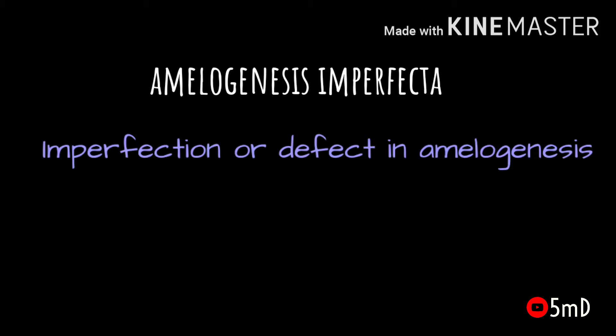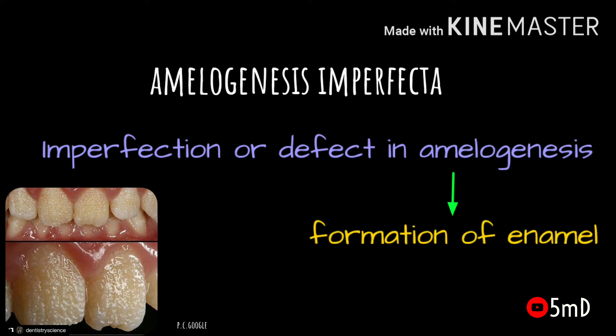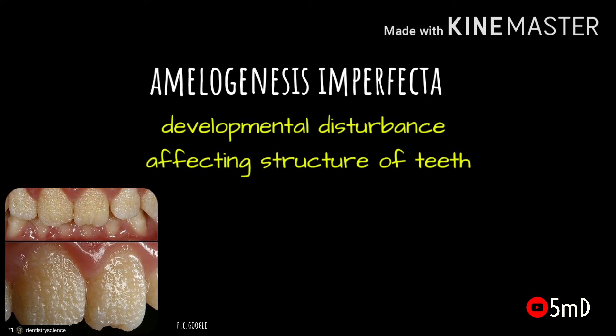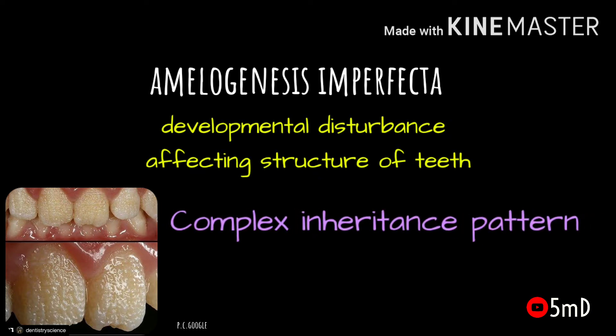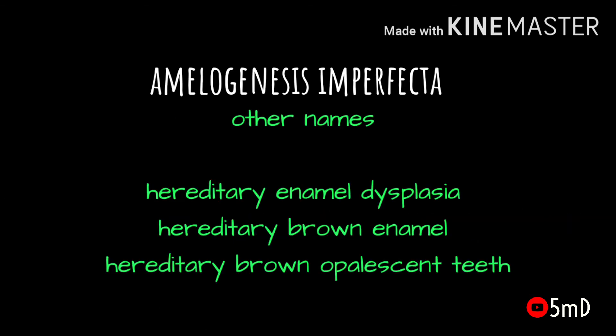Today we will see about amelogenesis imperfecta. As the name denotes, it is an imperfection or a defect in amelogenesis, or the formation of enamel. It is a developmental disturbance in the structure of teeth. It has a complex inheritance pattern and is also known by the names hereditary enamel dysplasia, hereditary brown enamel, and hereditary brown opalescent teeth.